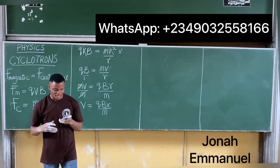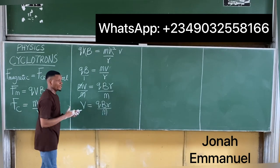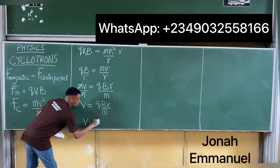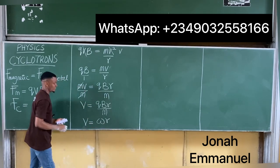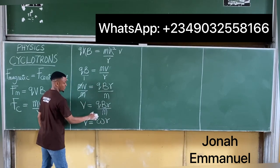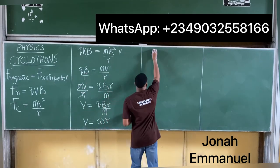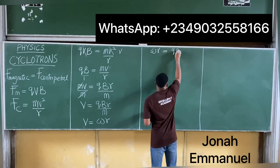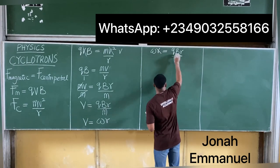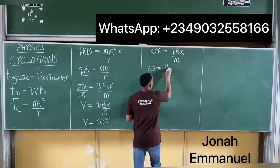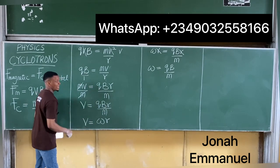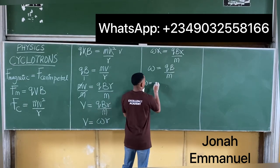Recall the relationship between linear velocity and angular velocity: v = ωr. Substituting this into our equation gives ωr = qBr/m. The r's cancel, so angular velocity ω = qB/m.